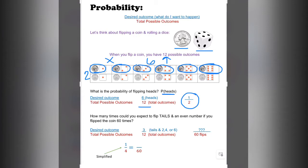Now let's look at how many times you could expect to flip tails and an even number if you flip the coin 60 times. Let's find the combinations that have tails, that's the bottom row, and even numbers, which are 2, 4, and 6. There are 3. The total number of outcomes is 12. In simplest form, that gives us a 1 out of 4 chance.